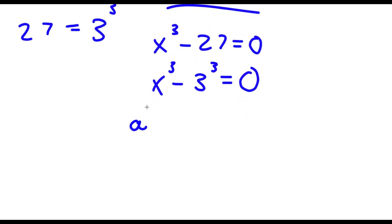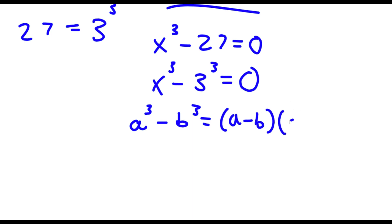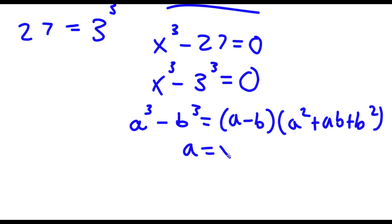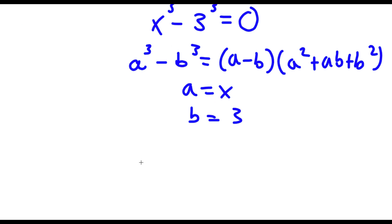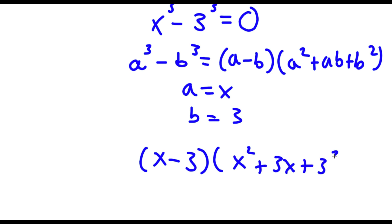Now, if I have something in the form a³ minus b³, this is equal to a minus b times a squared plus ab plus b squared. So in this case, a is equal to x and b is equal to 3. So now I have x minus 3 times x squared plus 3x plus 3 squared.